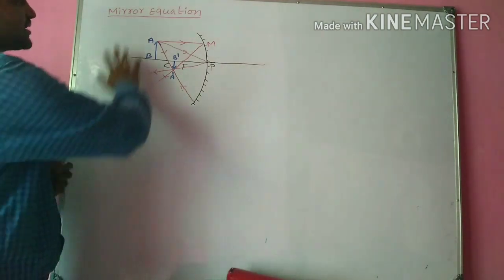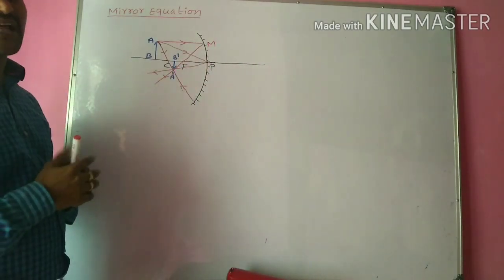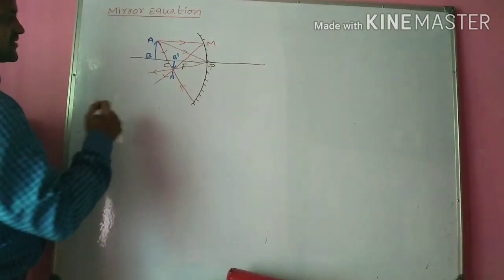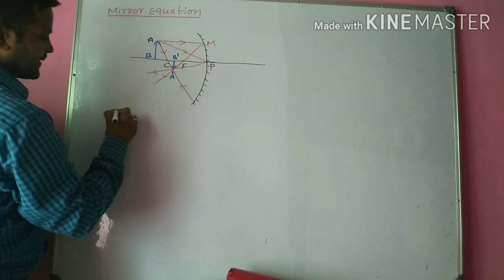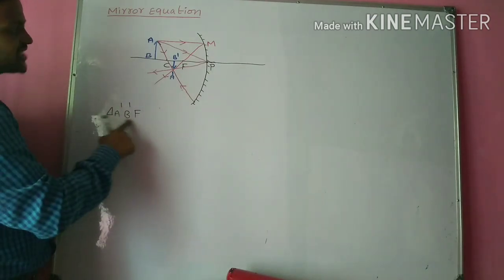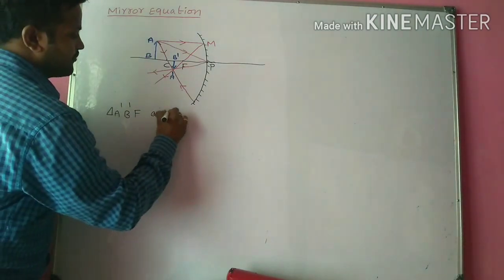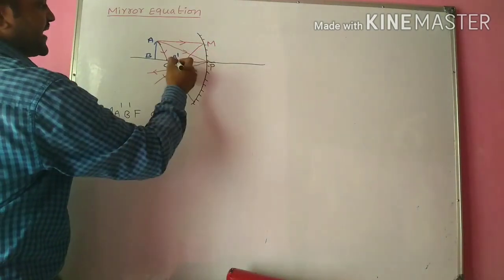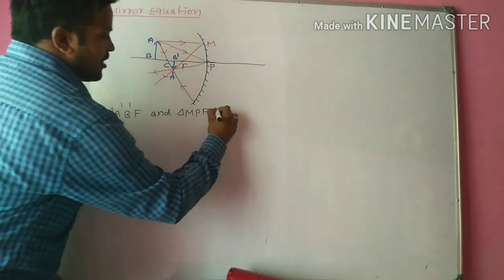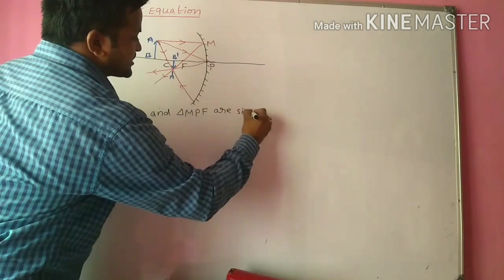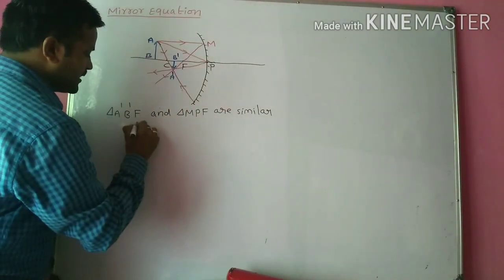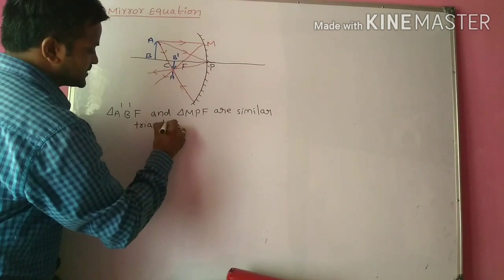Now let us consider similar triangles from this figure. The first pair of similar triangles is triangle A'B'F and triangle MPF. These two triangles are similar triangles — you can also call them right-angle similar triangles.